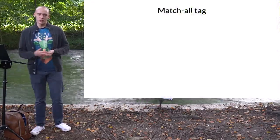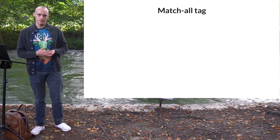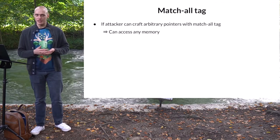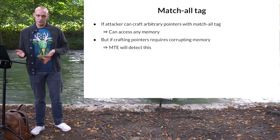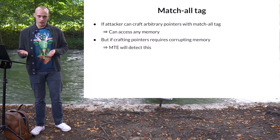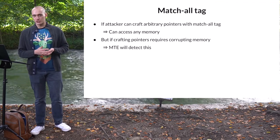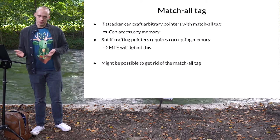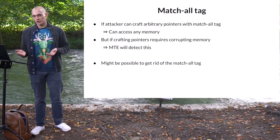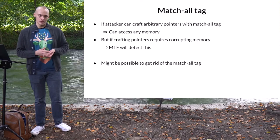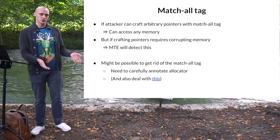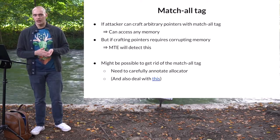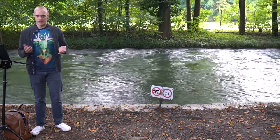Another in-kernel MTE weakness comes from the presence of the match-all pointer tag. If an attacker can craft pointers with FF as the top byte, any memory can be accessed. But crafting these pointers has to be possible without memory corruption — so, for example, overwriting pointers via a use-after-free is out. It might be possible to get rid of the match-all tag, but this would require carefully annotating allocator code to ensure it uses proper tags when managing its memory, and there are other issues to resolve.